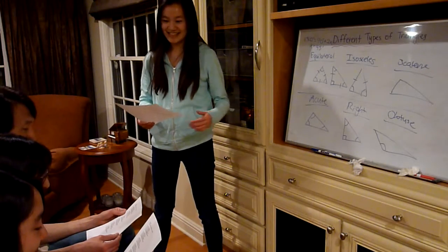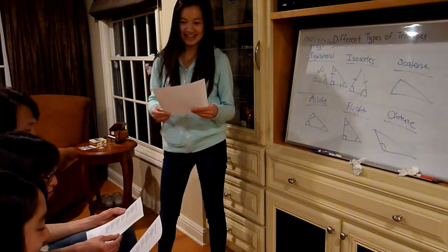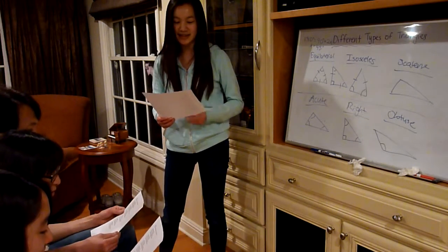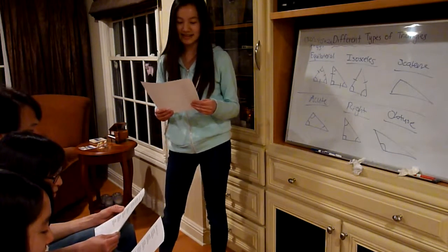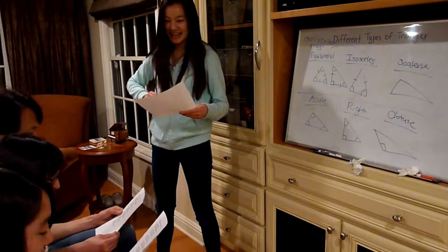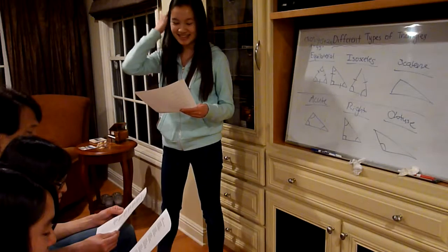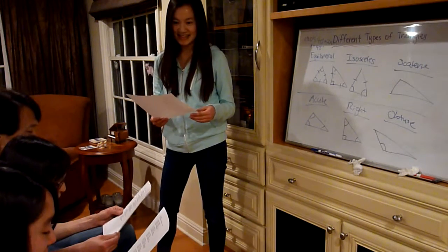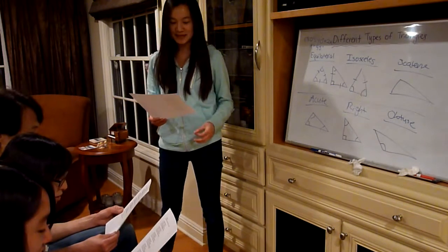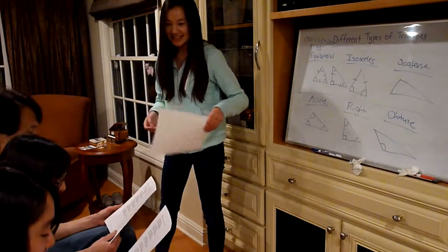An equilateral triangle has three equal sides and three equal angles, two other kinds are there. An isosceles triangle has two equal sides and two equal angles, two other triangles are there. A scalene triangle has no equal sides and no equal angles either, but other triangles are there. An acute triangle has really small angles that are less than 90 degrees, but other kinds are there. A right triangle has one right angle that equals 90 degrees, but other kinds are there. And an obtuse triangle has one angle that's greater than 90 degrees, and that was the last one. Thank you.